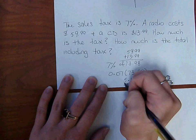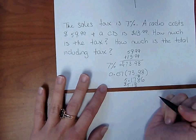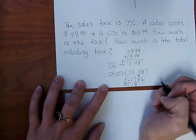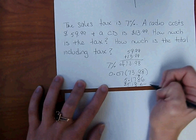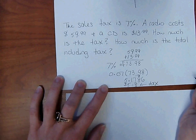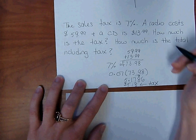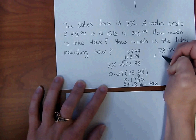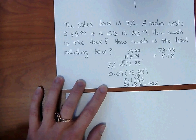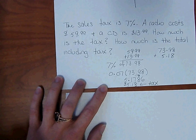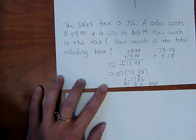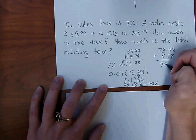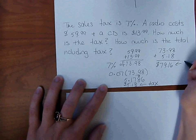That's what we have to pay on top of our total. So for the question 'how much is the tax?', $5.18 represents the tax. For 'how much is the total?', our subtotal was $73.98 plus the tax of $5.18, so our total including tax is $79.16.